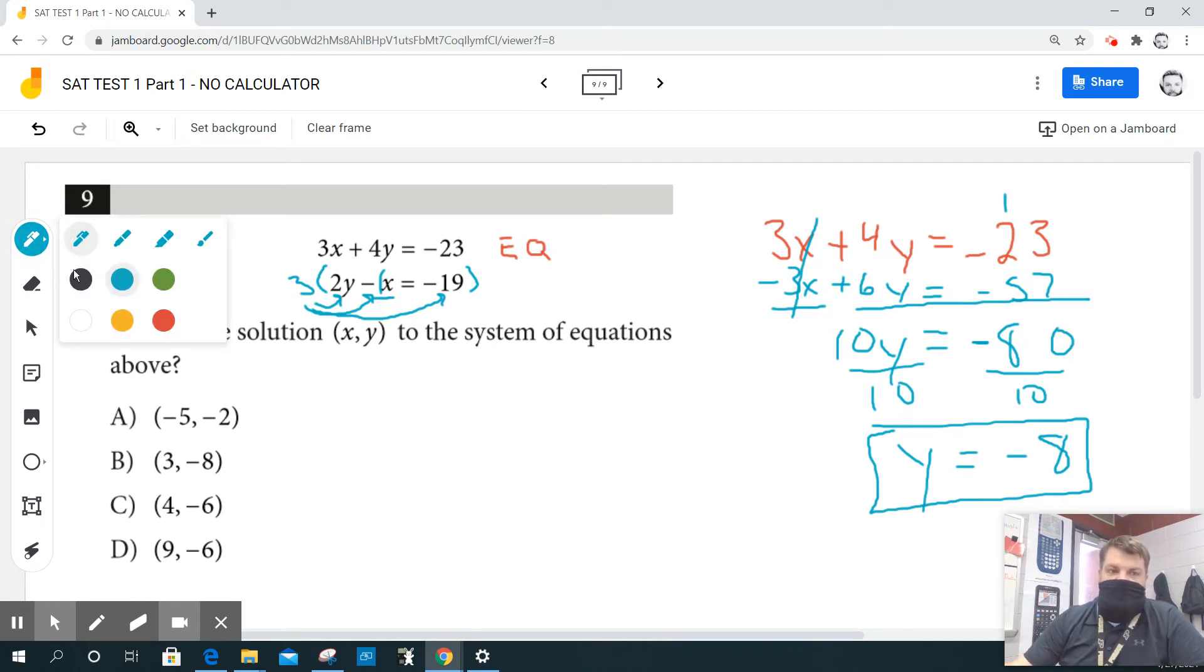So now I'm going to go back. Remember I need an x comma y, right? So I have y equals negative eight. By the way, the answer is probably B, but I want to be 100% sure. So I'm going to go back to equation number one and I'm going to say three times x plus four times y, but what do we think y is? Negative eight, is equal to negative 23.